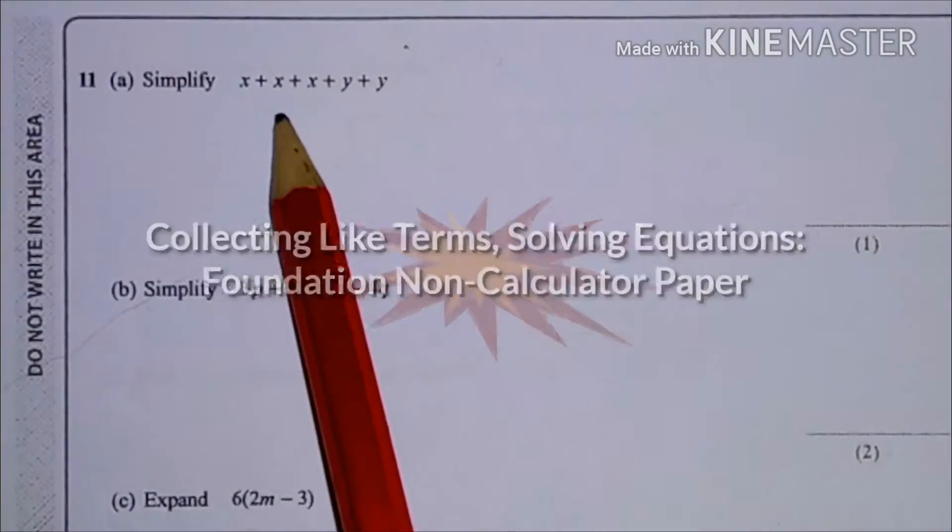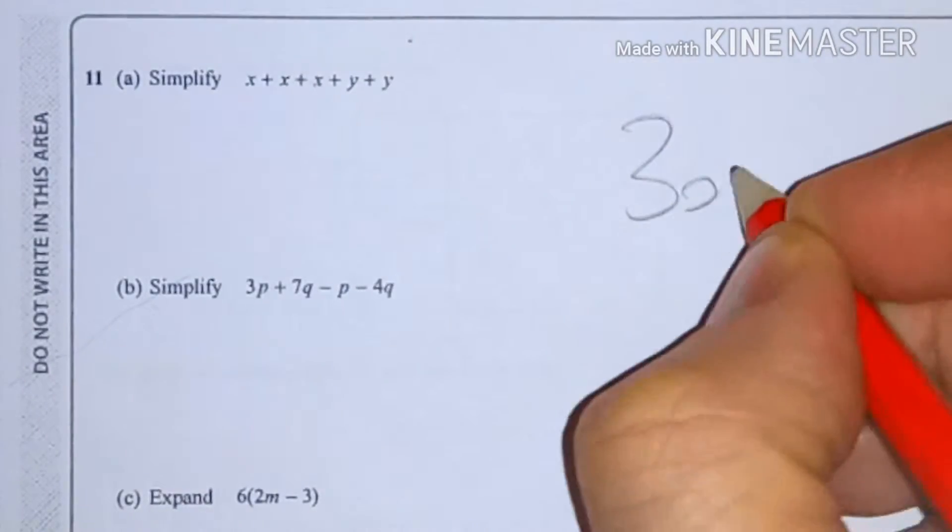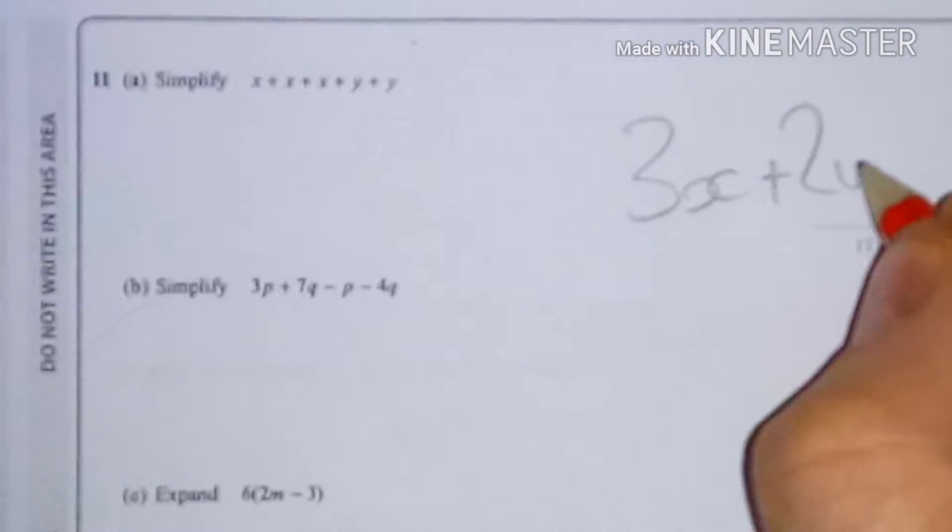Alright, simplify x plus x plus x plus y plus y. I've got three x's and I've got two y's.